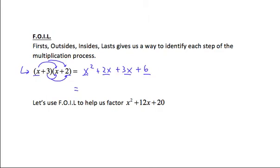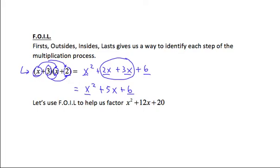Now we've put a name to every term from multiplying: Firsts, Outsides, Insides, Lasts. We finish by adding the two middle terms — 2x and 3x are like terms, so we get 5x plus 6. Looking at the final trinomial: the first term comes from Firsts, the last term from multiplying the Lasts (2 times 3 gives 6), and the middle term 5x comes from Outsides plus Insides.